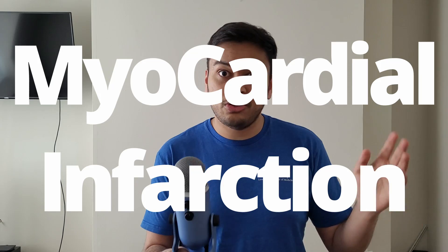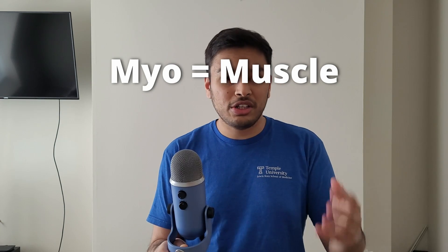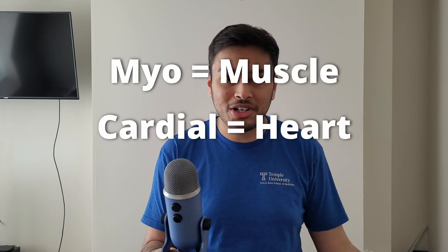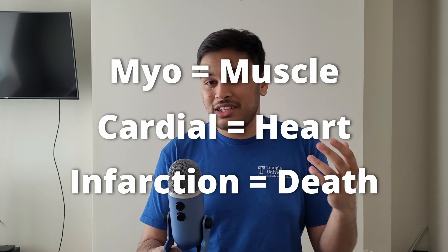So what exactly is a heart attack? The medical term for it is a myocardial infarction. If we break that down: myo means muscle, cardial obviously referring to cardiac, which is the heart, and infarction meaning dead tissue — in this case due to the lack of oxygen. It's basically saying that there's dead tissue in response to low blood flow because of low oxygen.